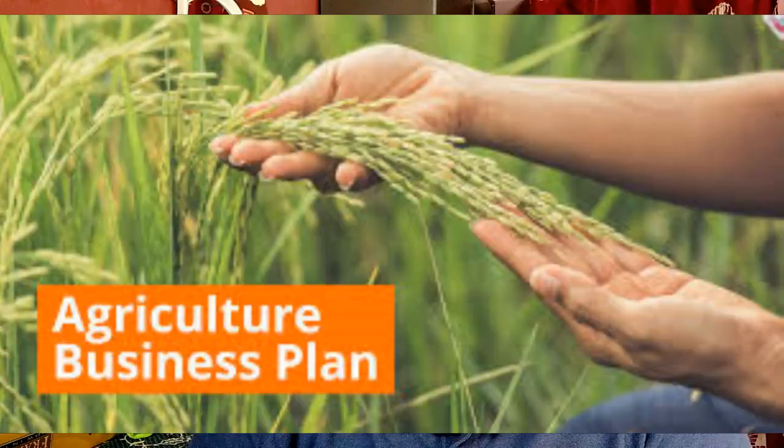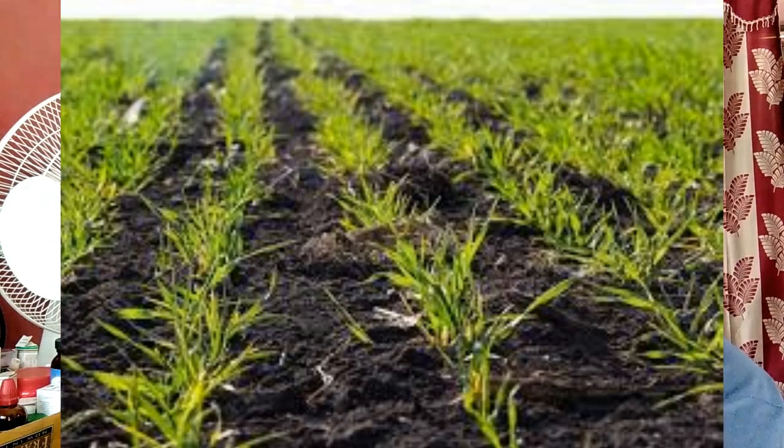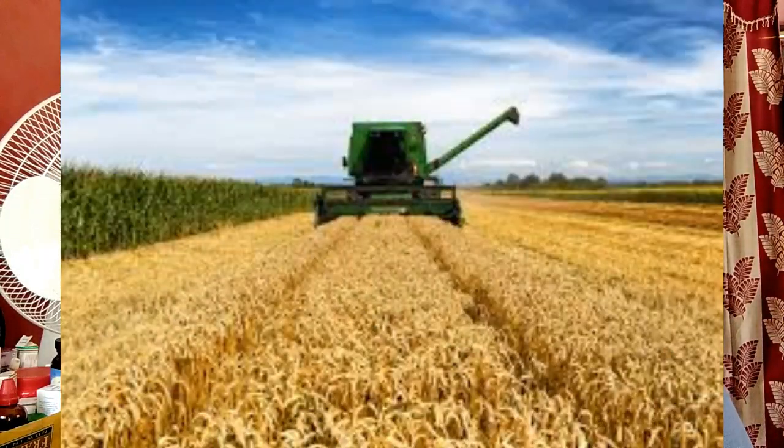The next point is: what are the seven steps of agriculture? The seven steps involved in agricultural practices are mentioned below: plowing, sowing, adding nutrients, irrigation, production, protecting plants, harvesting, and storage.